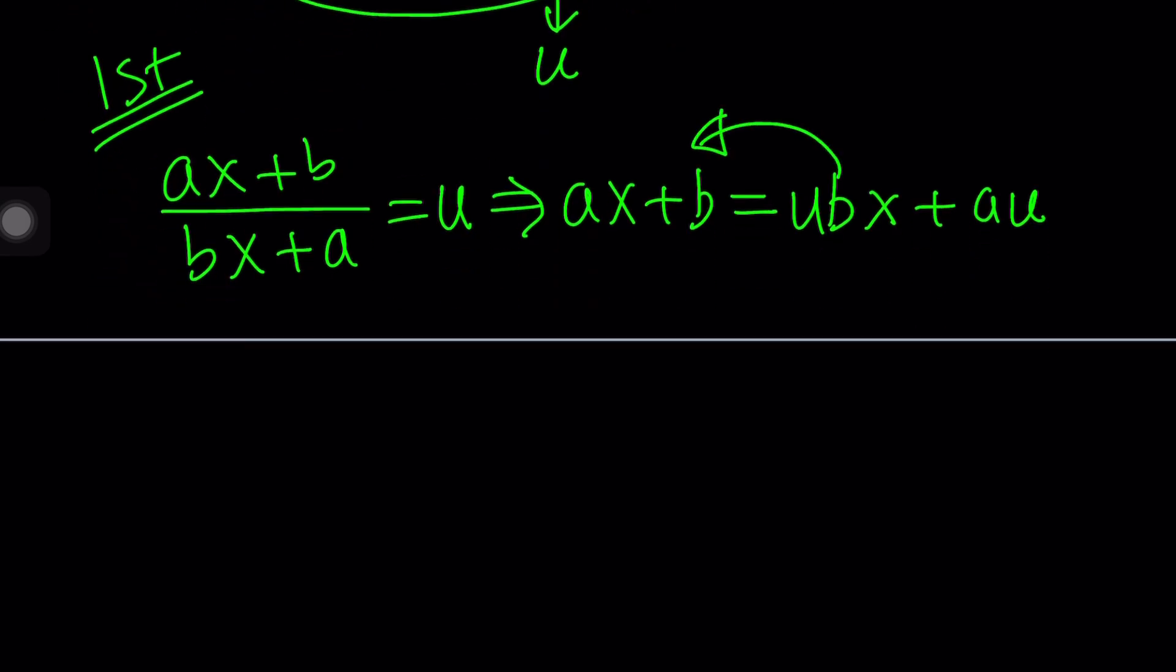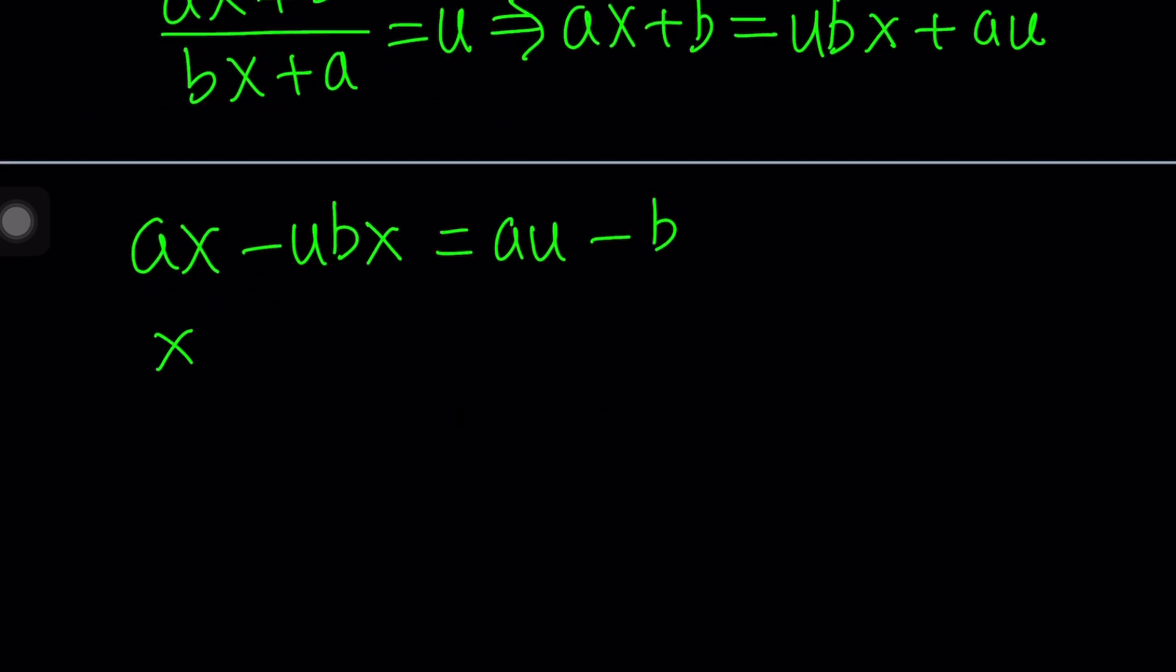Now our goal is to solve for x, so let's put the x terms together. We're going to bring this over to the left: ax minus ubx, and that's going to equal au minus b.